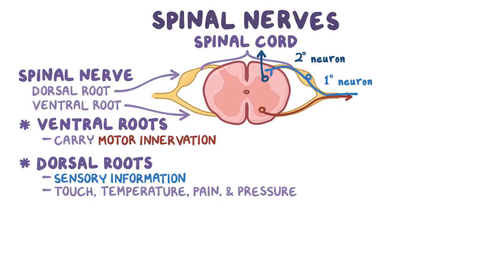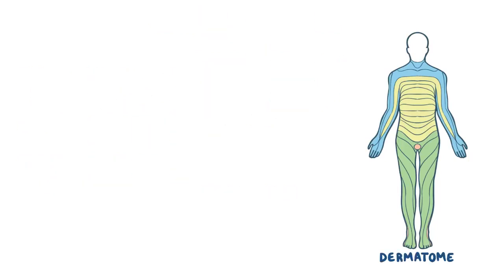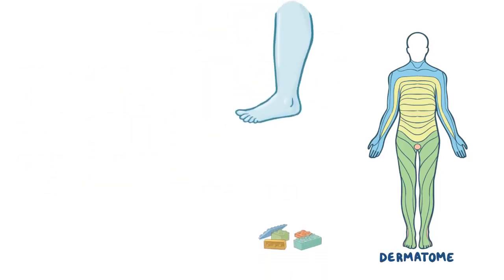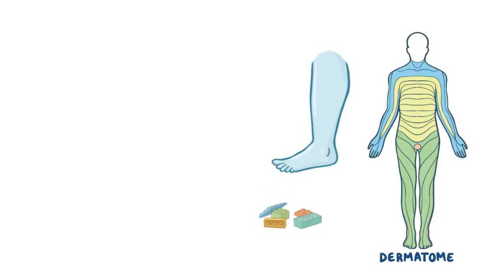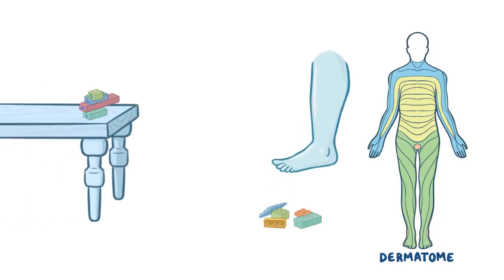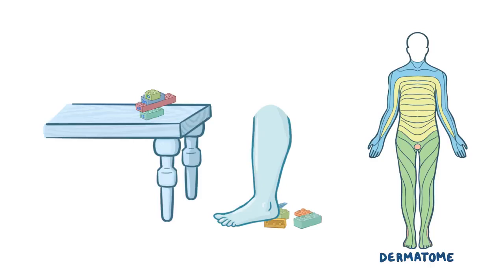Each spinal nerve is in charge of the sensation of a specific area of the skin, called a dermatome. For example, if you step on a Lego, the pain would be carried by the S1 nerve, but if you hit your big toe on a table leg, the pain would be carried by the L5 nerve.